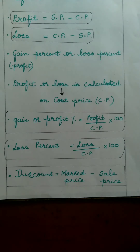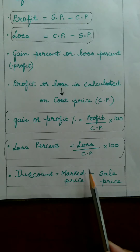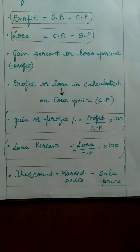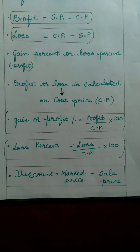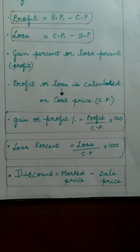Discount can be calculated by subtracting the sale price from the marked price. Therefore, discount equals marked price minus sale price. In the topic of discount, remember: discount is always given on the marked price of the article, and it is generally given to attract consumers so that more items can be sold and the seller can earn a profit.